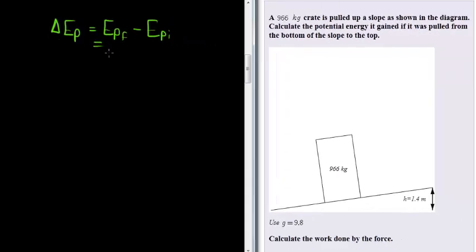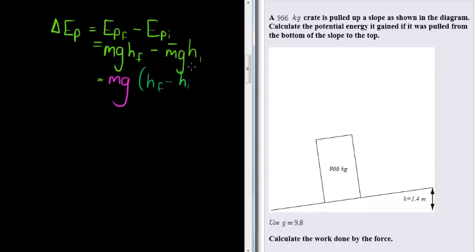But let's just take this formula a little bit further and you'll see something interesting. We see that this is mass times gravity times final height, minus mass times gravity times initial height. And we notice here that mass and gravity, we can take it out as a common factor, and we're left here with final height minus initial height. And this is simply the change in the height, which is what we have.